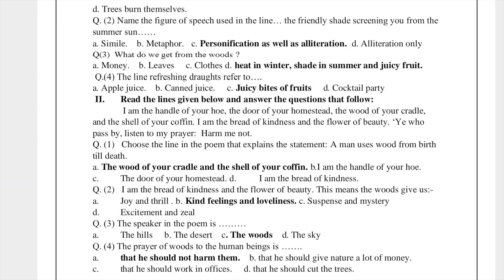Question number 3: What do we get from the woods? Options are: money, leaves, clothes, or heat in winter, shade in summer, and juicy fruit. In winters we get warmth, in summers cool shade, and we also get juicy fruits. So the right option is D — heat in winter, shade in summer, and juicy fruit.